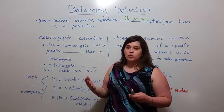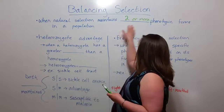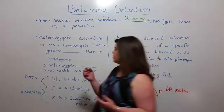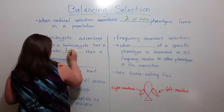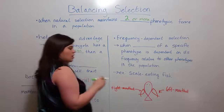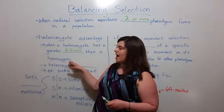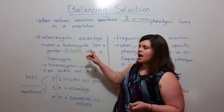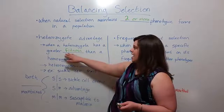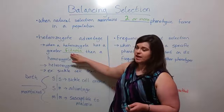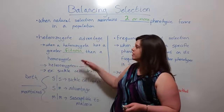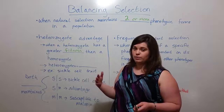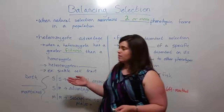Heterozygote advantage is when a heterozygote — an individual having one allele for each of those phenotypic forms — has a greater fitness than either homozygote. The homozygotes would have two alleles for one of the forms or two alleles for the other form. The heterozygote has one allele for each, and because the heterozygote has a greater fitness — meaning a better ability to survive and therefore reproduce — both alleles, both phenotypic forms, are maintained in the population.